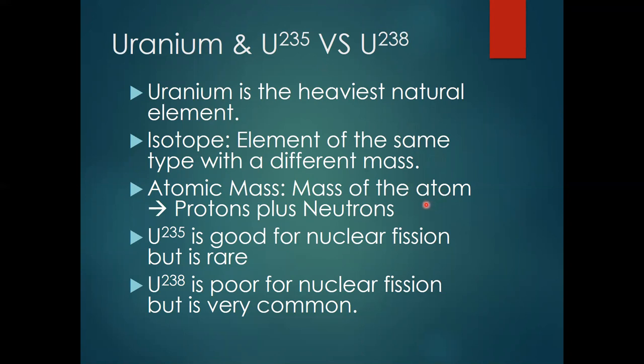How do we get those numbers, 235 and 238? That's the atomic mass — we add up the protons and the neutrons. Now, U-235 is really good for nuclear fission, but it's very radioactive and it's rare. U-238 is not very good for nuclear fission, but it's really common. So this is why we have to undergo this time-consuming process to up the amount of U-235 in a natural sample of uranium.